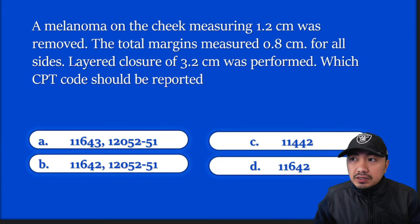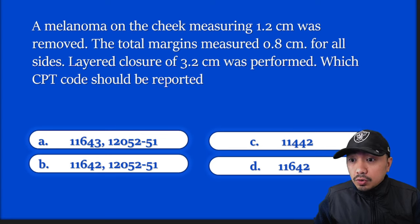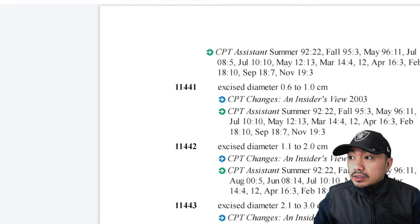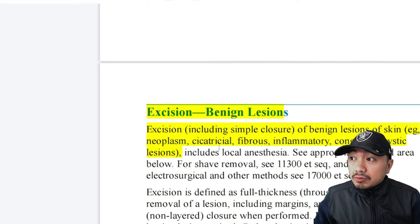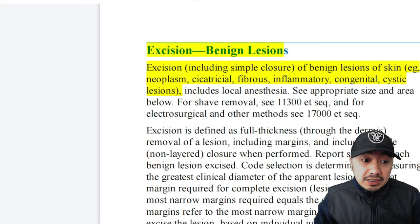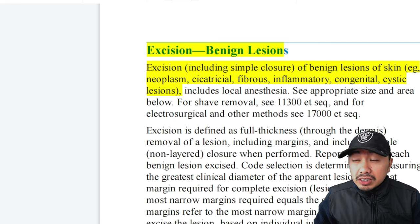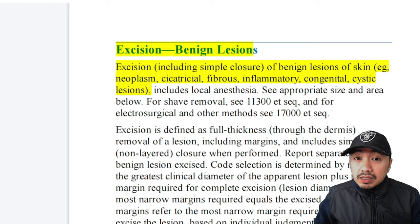Time's up. For this question you need knowledge about excision of skin lesion guidelines plus repair. Under CPT codes 14116, you have excision of benign lesion and excision of malignant lesions respectively. Excision already includes simple repair, so if only a simple repair was done, you don't have to code it separately. However, if intermediate or complex closure was done, you do have to code the repair. Since the question gives you a melanoma — a type of skin cancer — you need to go to excision of malignant lesion.